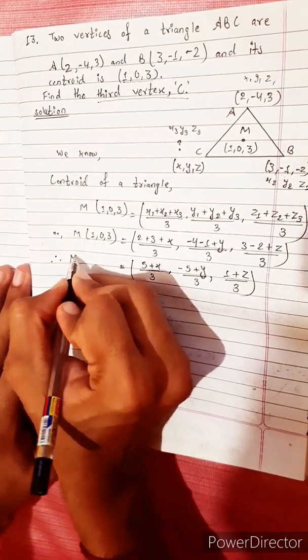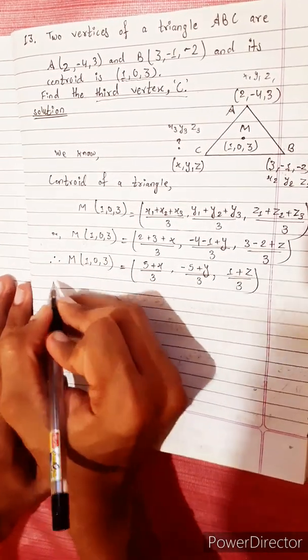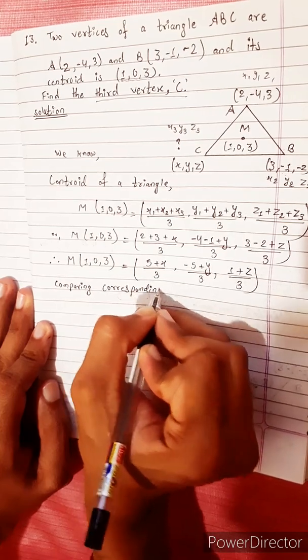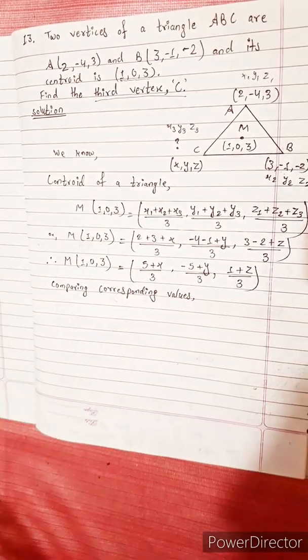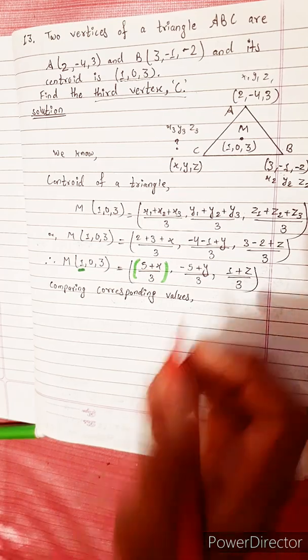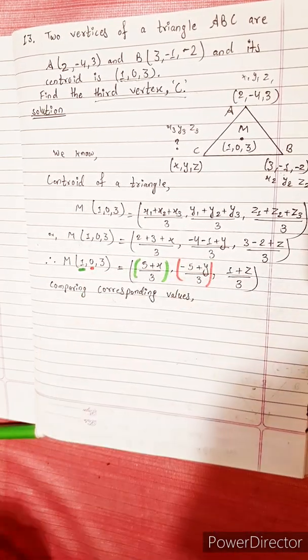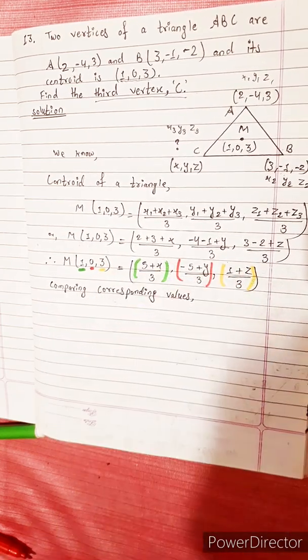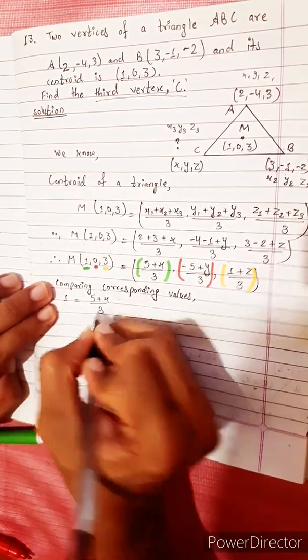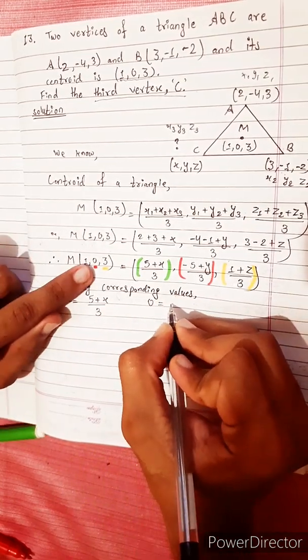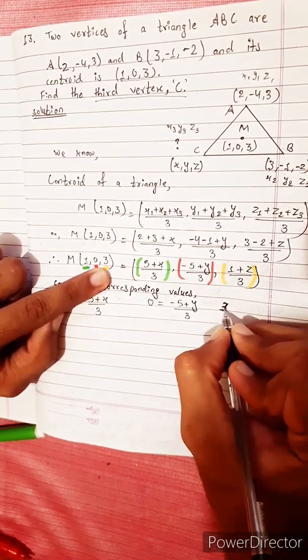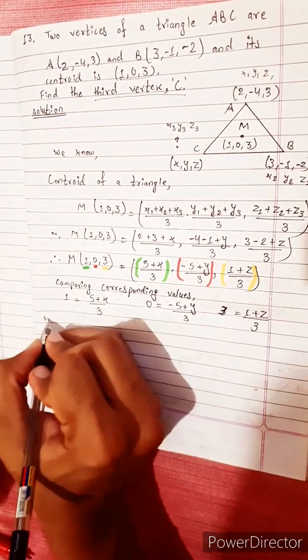Therefore we have M(1, 0, 3). Comparing corresponding values, we compare x-coordinates, then y-coordinates, then z-coordinates. 1 equals (5 plus x) by 3, 0 equals (-5 plus y) divided by 3, 3 equals (1 plus z) divided by 3.